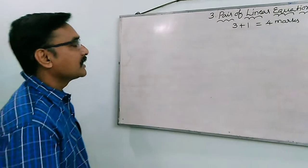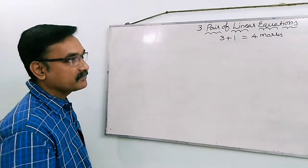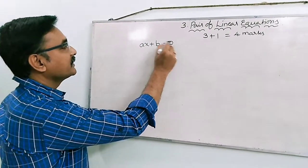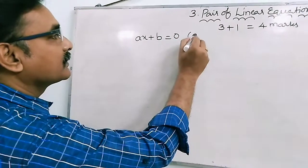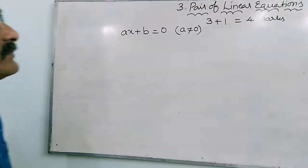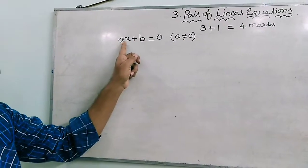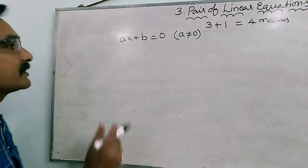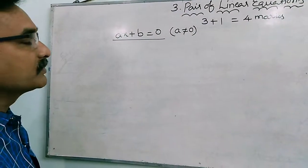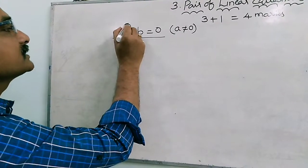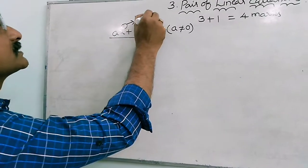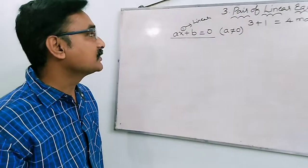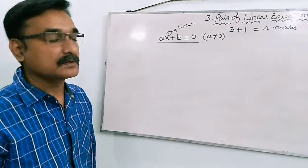Before this, you have already learned in class 8 linear equations in one variable. The general form of linear equations in one variable is ax plus b equals to 0, where a is not equal to 0. We take the condition a not equal to 0 because if a equals to 0, the expression becomes just a constant. Since the highest power of the variable is equal to 1, we call it linear. Linear means the highest power or highest degree is equal to 1, and such type of equation is called a linear equation.